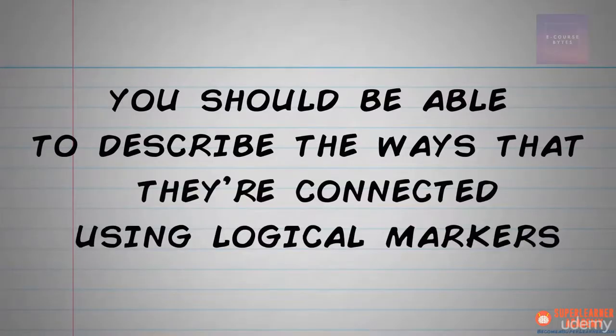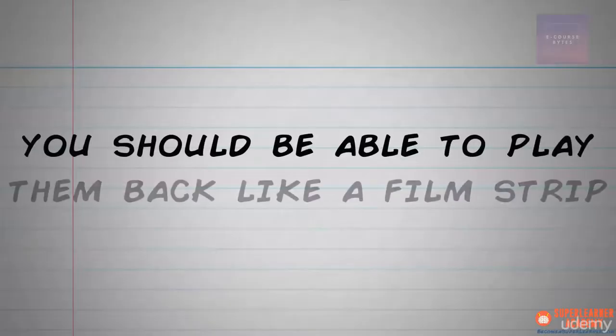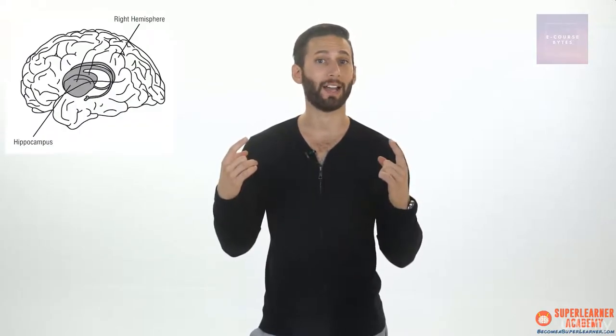Now that you understand the basics of creating markers and have practiced in your daily life, it's important to learn more specifically how you should work with them. In the previous demonstration on the Garden City movement, we didn't discuss much about how you should actually link your markers together. We've since explained that you should be able to describe the ways they're connected using logical markers, creating a distinct relationship between them, and also that you should be able to play them back like a film strip. Creating relationships and dense linkages between data points is going to make them more memorable to the hippocampi.